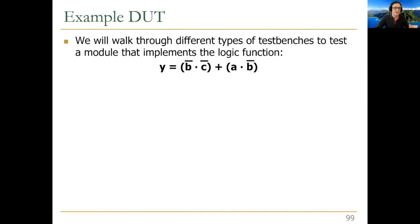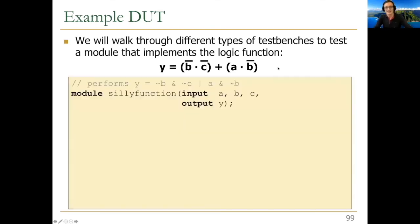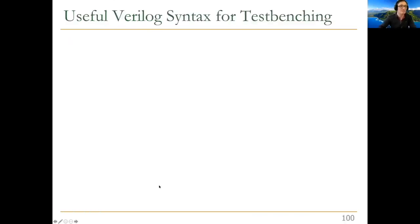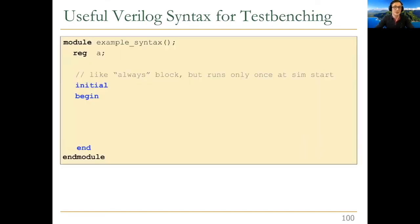We'll walk through different types of test benches you may design during labs to test a module implementing a simple logic function. For Verilog test bench syntax, we use an initial block — it's like the always block but runs only once at simulation start. These are Verilog constructs for simulation purposes. You can set a register value to zero, use a blocking assignment, wait for 10 nanoseconds, then set A to 1.